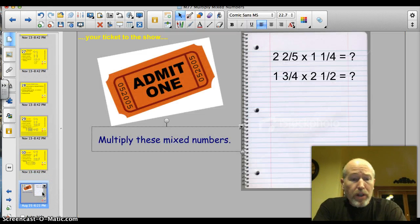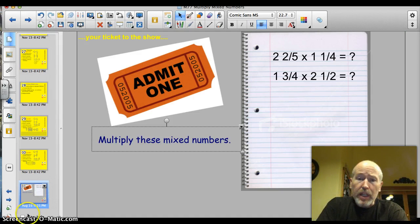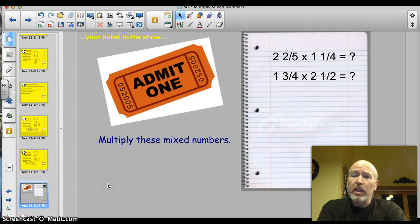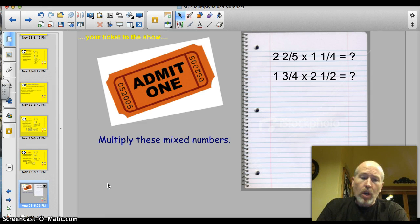Okay, here are your two questions to try for your ticket. I'll pause for a minute and let you write these down. Two and two-fifths times one and one-fourth. And then, one and three-fourths times two and one-half. Okie dokie.